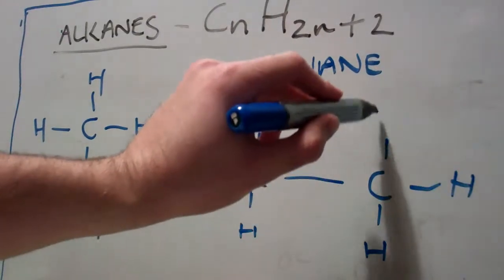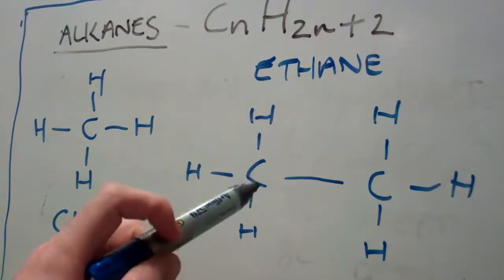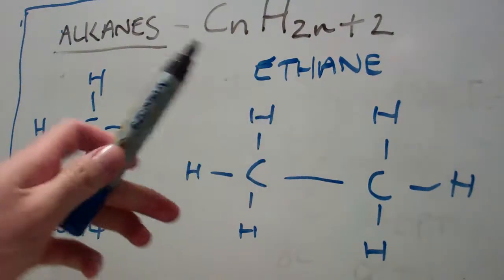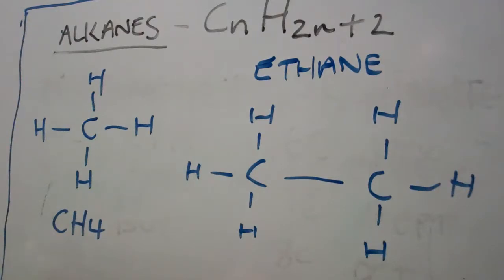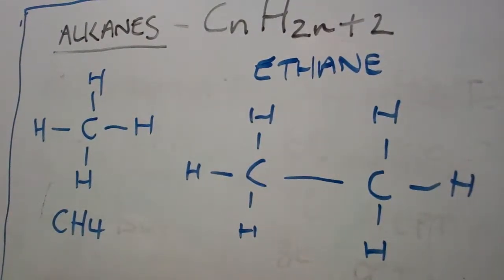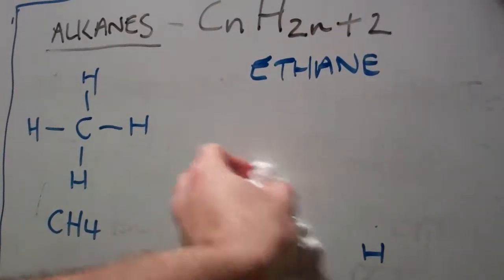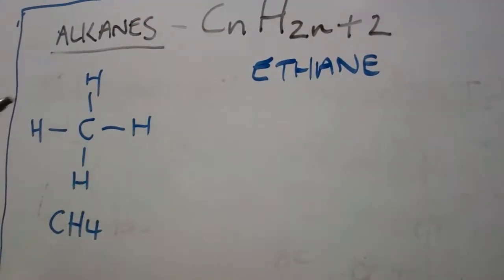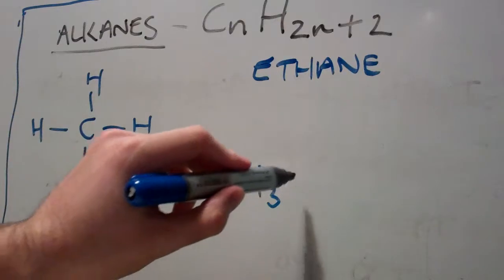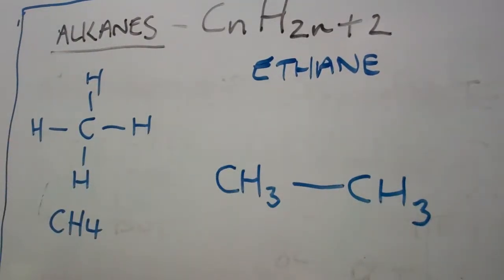Now, hydrogens are placed like this because each carbon needs to have four bonds to have a full outer shell of electrons. A simpler way to write something like ethane, and the way that I'm going to get you to do it from now on is like this because it saves space and time. We're going to go CH3 bonded to CH3 and that'll be ethane.